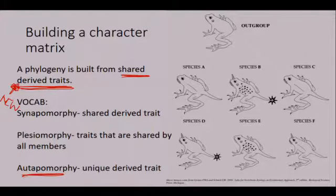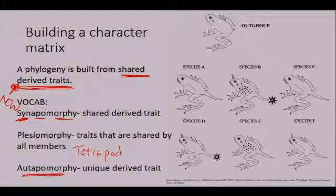We're looking at synapomorphies. Syn means shared, these are shared derived traits. A plesiomorphy would be a trait that everybody has. So in this example, it would be like tetrapods. All of the taxa in this tree that we're going to build have four limbs. Having four limbs at some point in evolutionary history is a unique shared derived trait, but at this point that doesn't give us any information. So plesiomorphies are not informative, synapomorphies are informative, autapomorphies are not. This is what we're looking for.